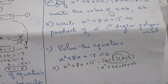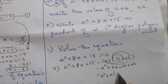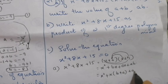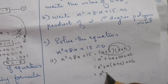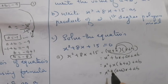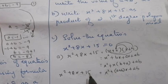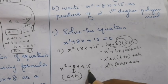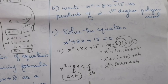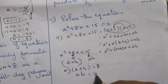Taking x common from the middle terms, we get x squared plus a plus b into x plus ab. Comparing with x squared plus 8x plus 15, the coefficient of x gives a plus b equals 8, and the constant gives a into b equals 15.